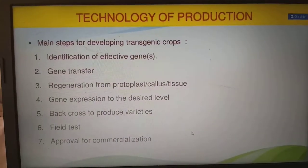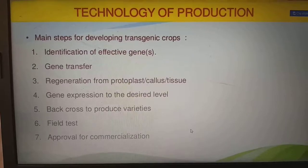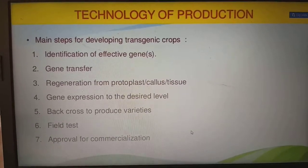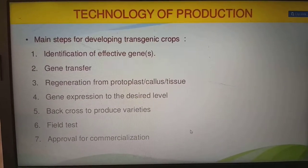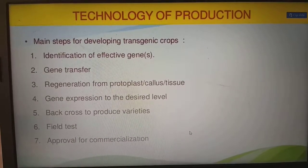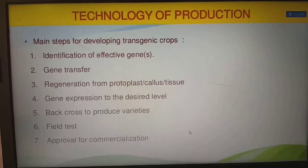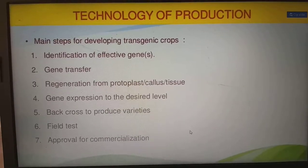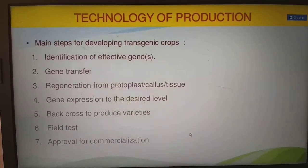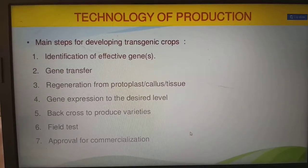The technology of production — the main steps for developing transgenic crops — are: identification of effective genes, gene transfer, regeneration from protoplast callus and tissue, gene expression to a desired level, backcross to produce the varieties, field testing, and approval for commercialization.